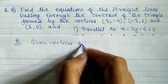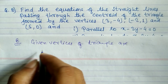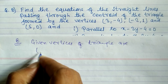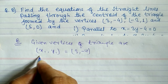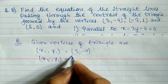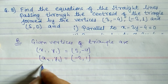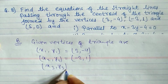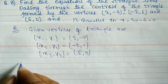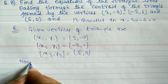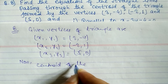The given vertices of the triangle are: x1, y1 = (3, -4); x2, y2 = (-2, 1); and x3, y3 = (5, 0). Now we have to find the centroid of the triangle.